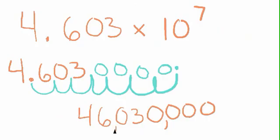So 4.603 times 10 to the seventh is 46,030,000.